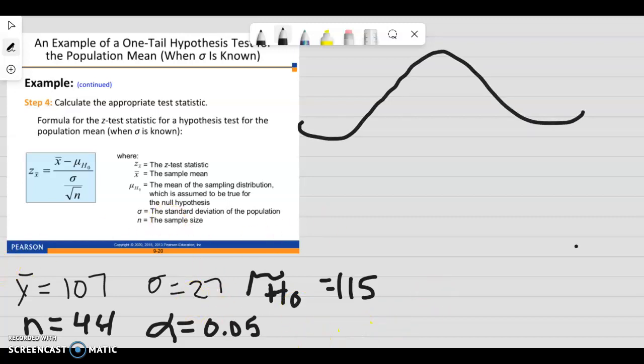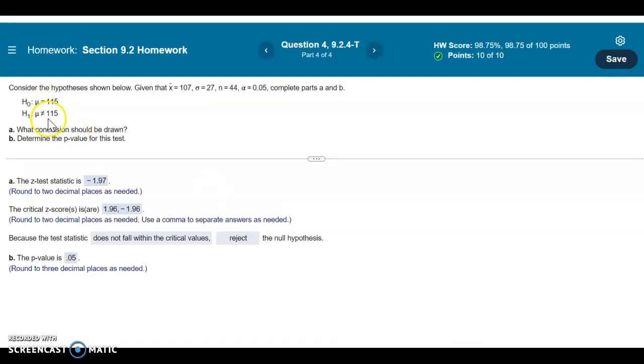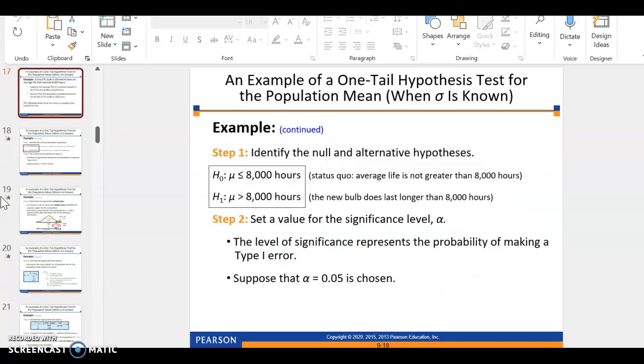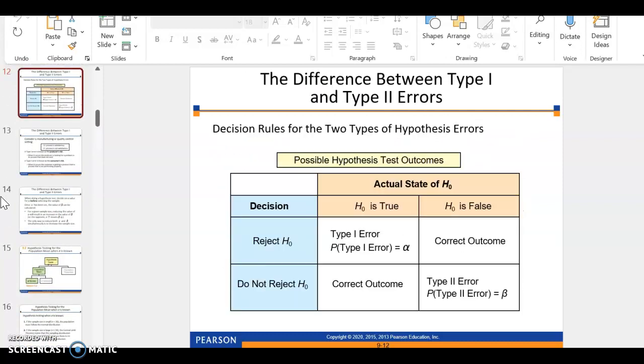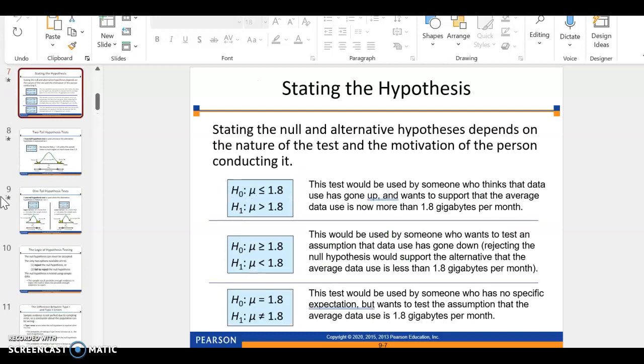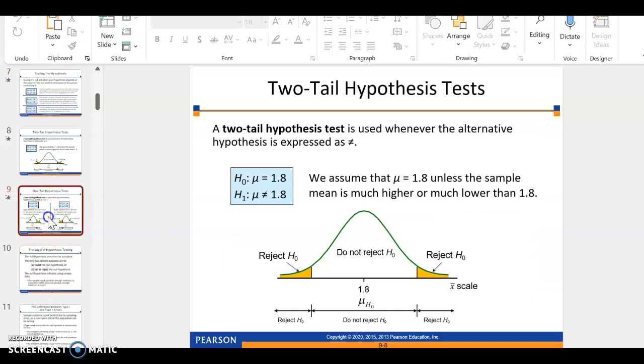Since our hypothesis is equal or not equal to, that is always a two-tail test. And let me just show you real quick in the PowerPoint. So a two-tailed hypothesis test is used when the alternative hypothesis is expressed as not equal to.